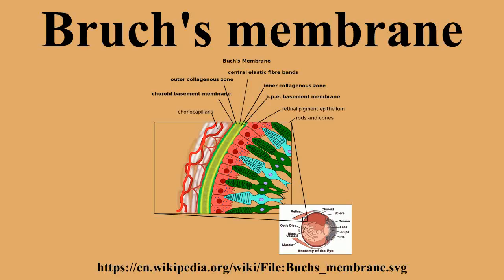Bruch's membrane thickens with age, slowing the transport of metabolites. This may lead to the formation of drusen in age-related macular degeneration. There is also a buildup of deposits on and within the membrane, primarily consisting of phospholipids.